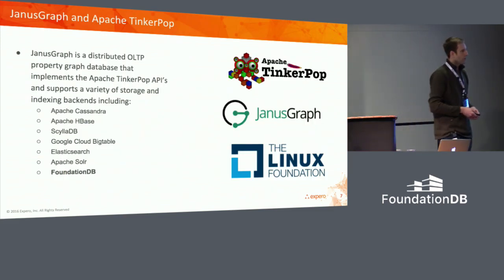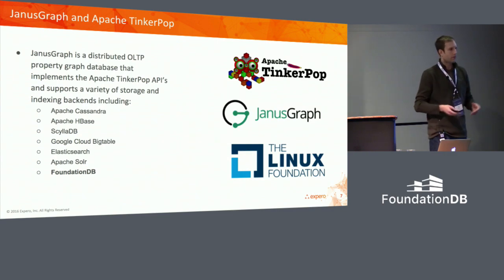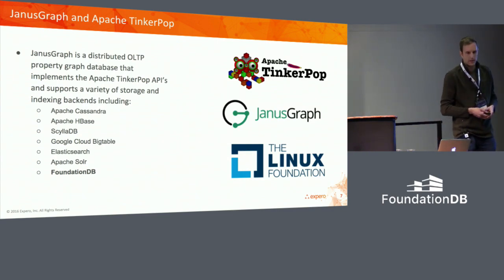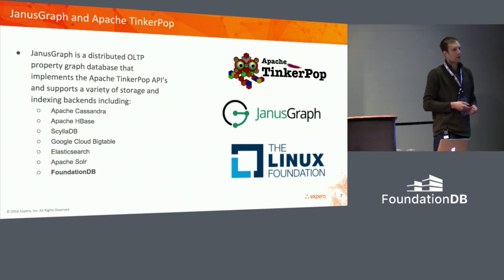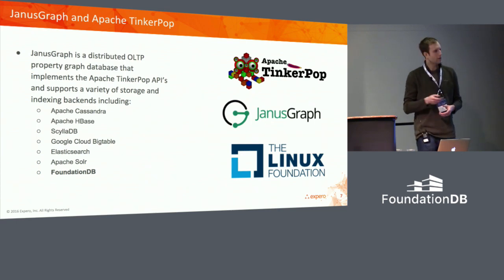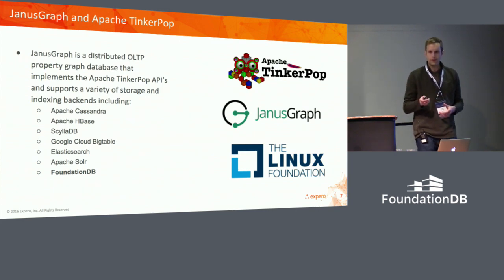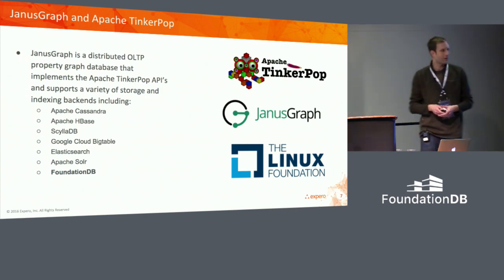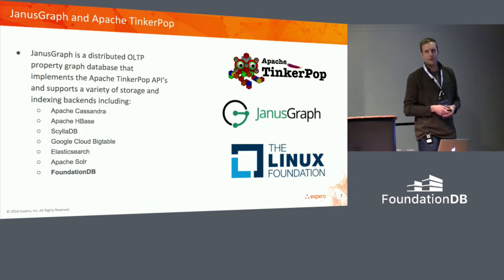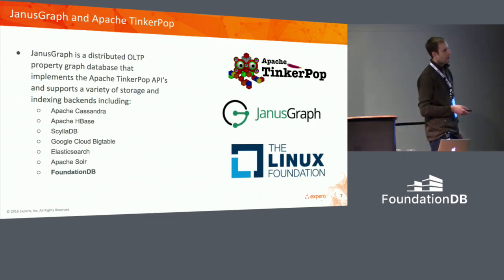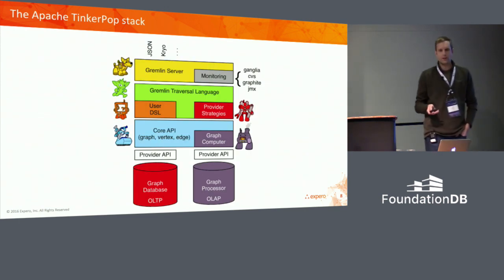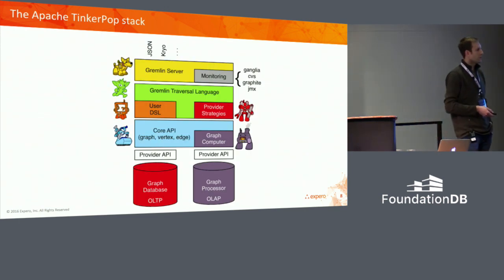The graph world right now is kind of exploding — lots of different vendors coming into the space. The one I'm going to talk about today is specifically the JanusGraph project. You may have heard of Titan before. JanusGraph is a fork of Titan. JanusGraph is hosted at the Linux Foundation. Apache TinkerPop is a graph processing framework that JanusGraph actually makes use of.